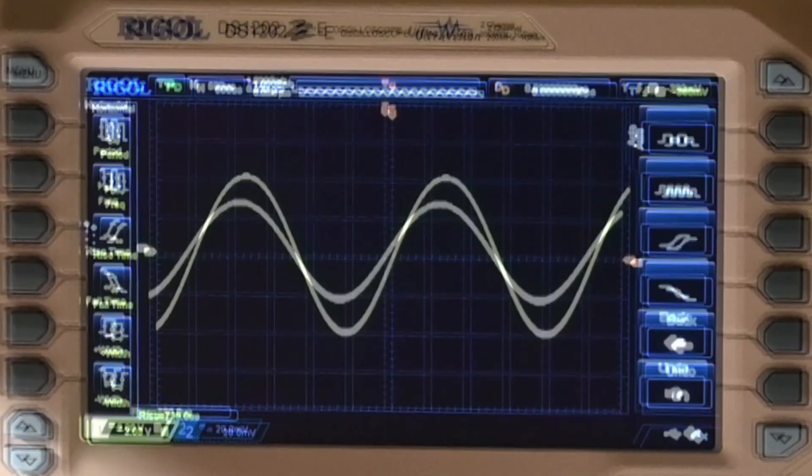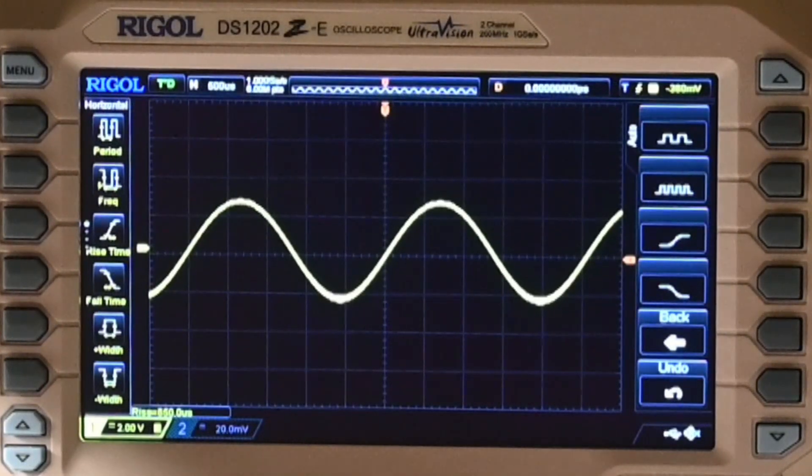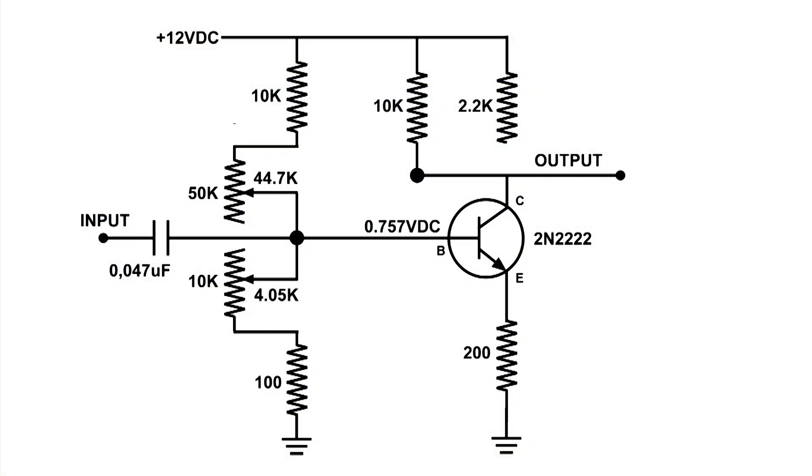The voltage on the base read 0.757, the top resistor total was 44.7k, and the bottom resistor was 4.005k.